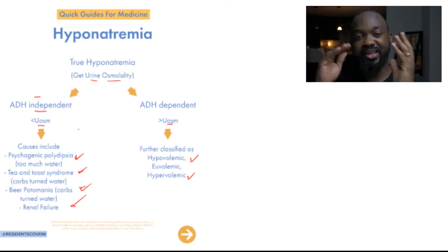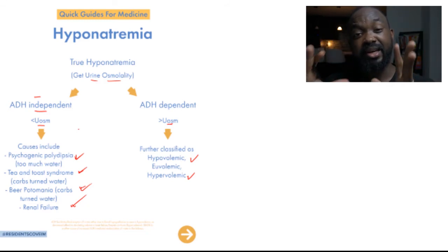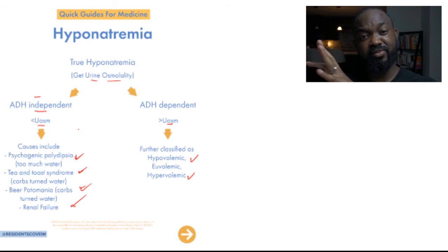How do we know whether it's ADH dependent or ADH independent? We use the urine osmolality. Urine osmolality, because when ADH is present, it goes into the kidneys and reabsorbs all of the water. What happens to the urine osmolality becomes high. That tells us when we have increased urine osmolality, that's ADH dependent.